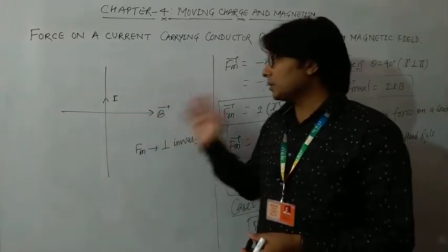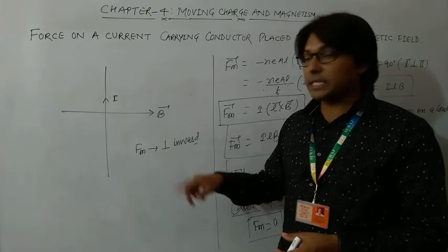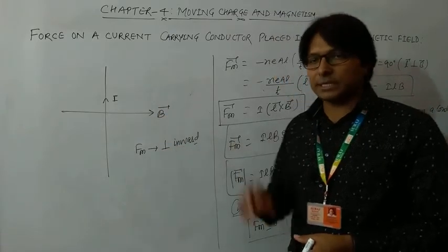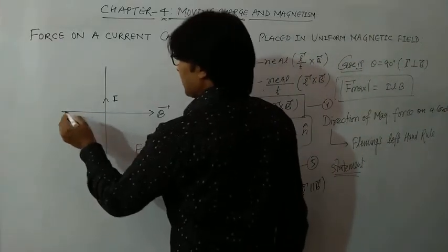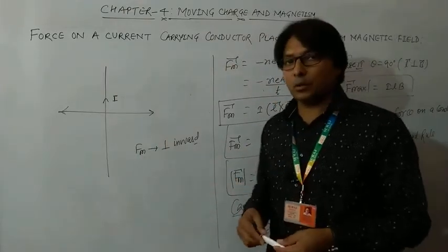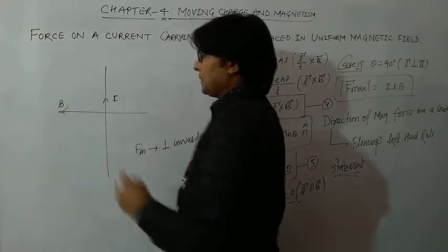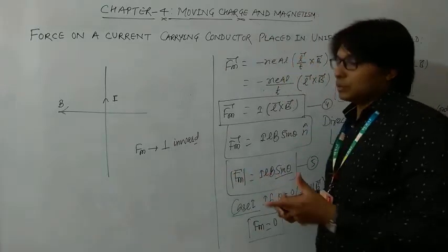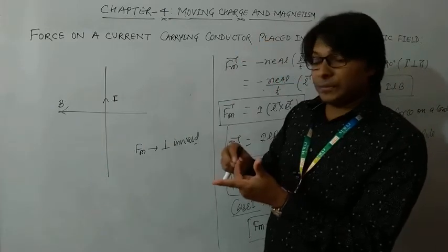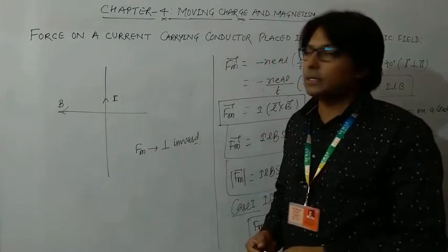Now, if I change the direction of any one quantity — say the magnetic field — the direction of force will be reversed. However, if both the magnetic field and current direction are simultaneously reversed, the direction of force remains the same. For example, if the magnetic field is now from right to left with the current in the same direction, applying the rule gives the force as perpendicularly outward.